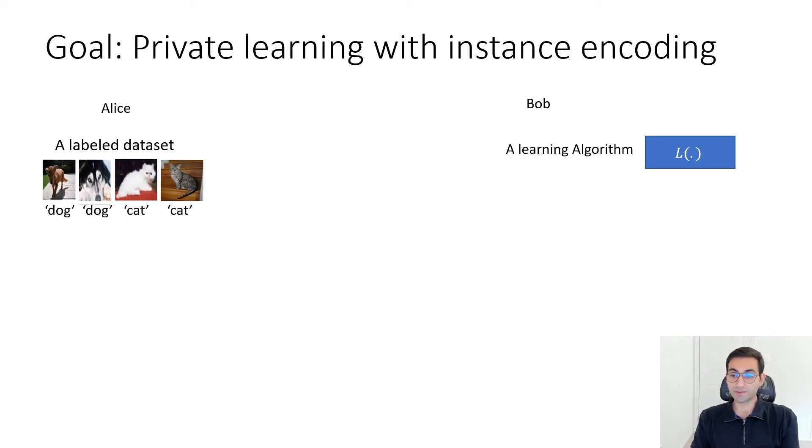Let's start with the problem setup and the goal of NeuroCrypt. We have a two-party setting, Alice and Bob. Alice has access to a labeled dataset, and Bob has access to a learning algorithm. The goal is to train a model on Alice's data without revealing too much information about that data.